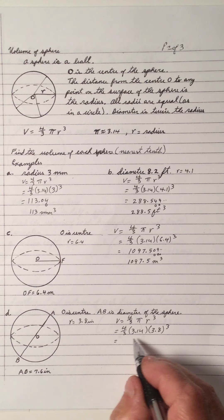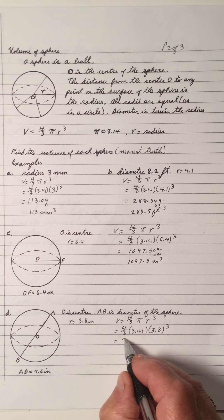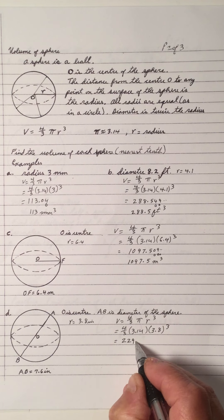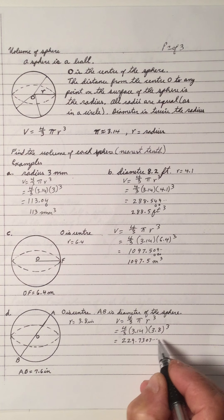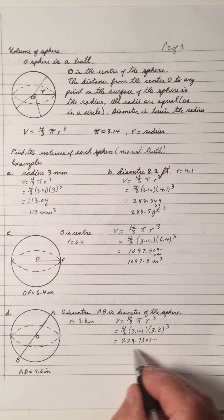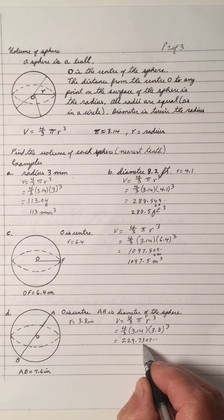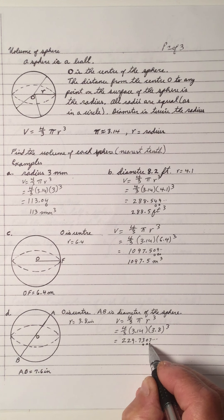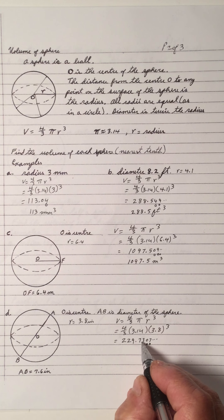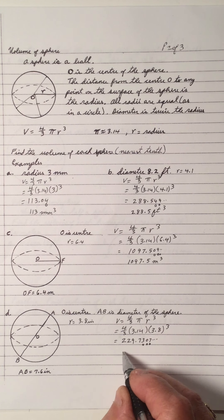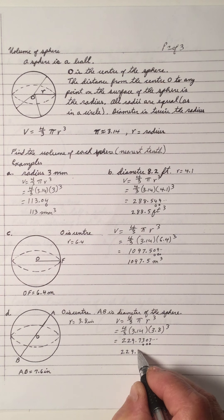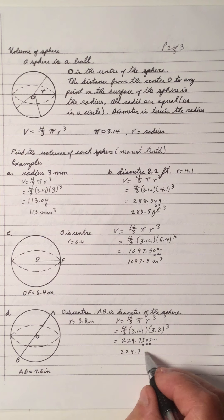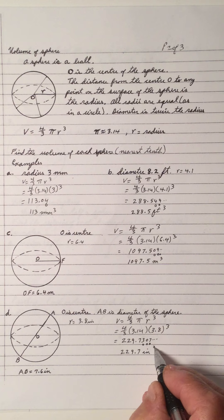Plug that into your calculator and you'll come up with 229.7307. Round that off to the nearest tenth — 7 is in the tenth place, so all the digits to the right become zero. This number is less than 5, so we don't change the 7. So it's 229.7, and it's inches, so it's cubic inches.